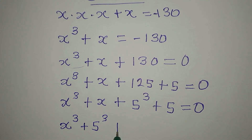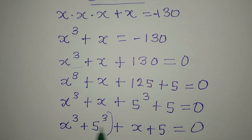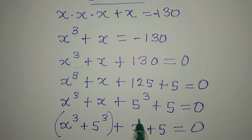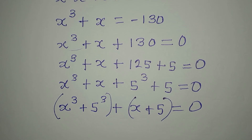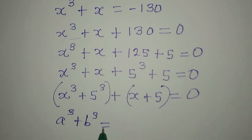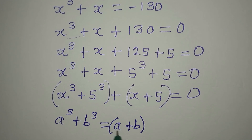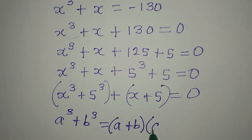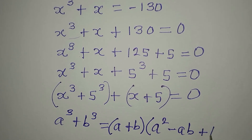Let us regroup. So we have x to the power of 3 plus 5 to the power of 3, then plus x plus 5, and everything equals zero. I'm going to simplify these separately. If you have a to the power of 3 plus b to the power of 3, this is the same thing as a plus b, times a squared minus ab plus b squared.